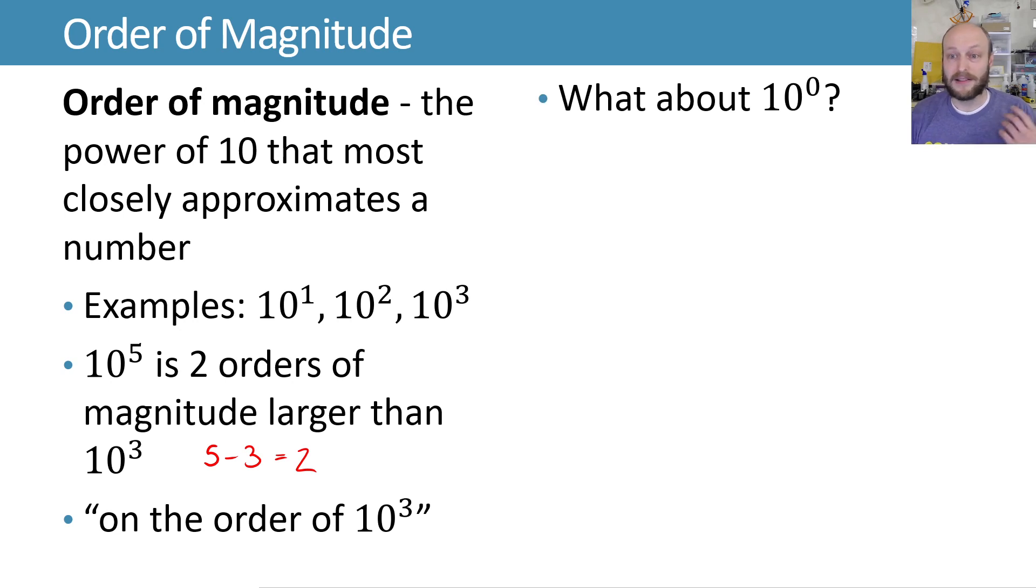So what about 10 to the zero? What does that mean? Well, if we raise 10 to the zero power, we get 1. So that's what we might sometimes call order unity.